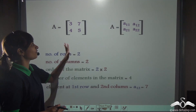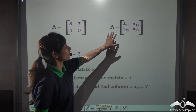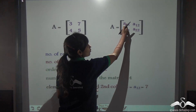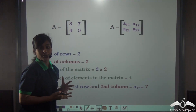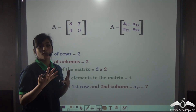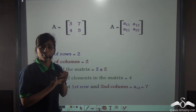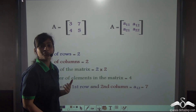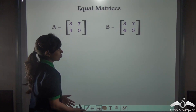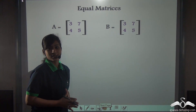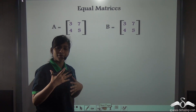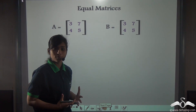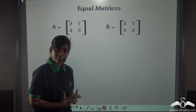Now you know how to define matrices and their elements, and how important rows and columns are. Never get confused when writing the order of a matrix. Always write the number of rows first and then the number of columns. Matrices can have any number of rows and columns, and the number of rows and columns may not be the same.